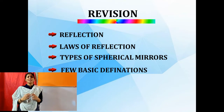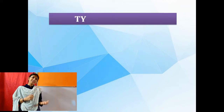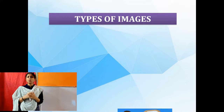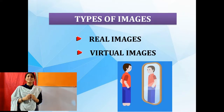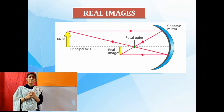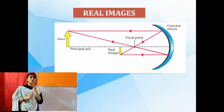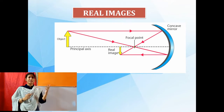Image is a point where all the reflected rays meet or appear to meet. In today's session we will be discussing about types of images. Basically there are two types of images: one is a real image and another one is a virtual image. Let's discuss about real image and virtual image one by one.